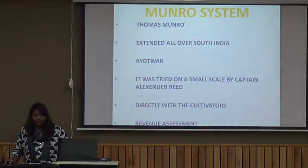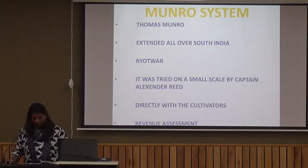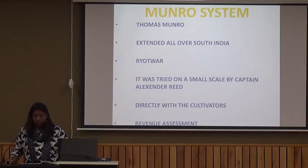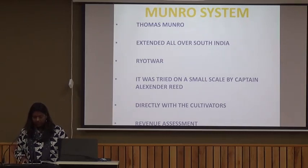The third system for the improvement of land and for more profit from the revenue system was the introduction of the Munro system, also known as the Ryotwari system. In the British territories in the south, there was a similar move away from the idea of Permanent Settlement. The new system was known as Ryotwari. It was tried on a small scale by Captain Alexander Reid in some areas taken over by the company after the wars with Tipu Sultan. Thomas Munro also introduced this system, and it gradually extended across southern India. This settlement had to be made directly with the cultivators — again no mediators — who had tilled their land for generations. Their fields had to be carefully and separately surveyed before the revenue assessment was made.